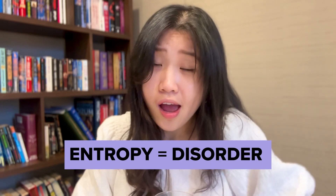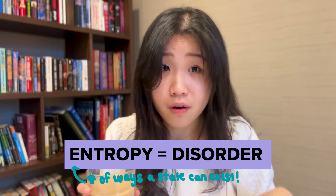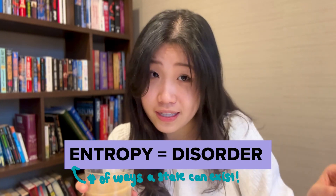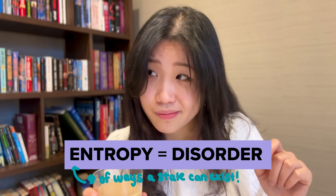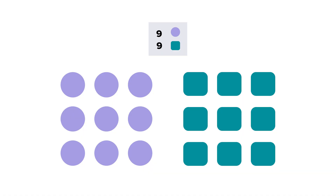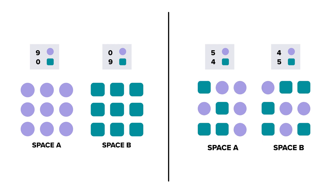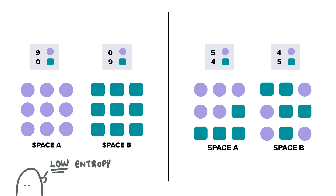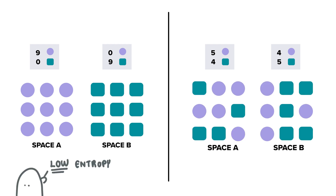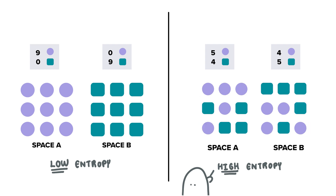Now, we just saw this milk tea go from a low entropy to a high entropy state. We often hear entropy described as a measure of disorder, but it really is a measure of the number of ways a state can exist. Let's take these circles and squares — there are so many more possible states of mixed arrangements than the one unmixed state. Thus, the mixed arrangement has a higher entropy than the unmixed one.